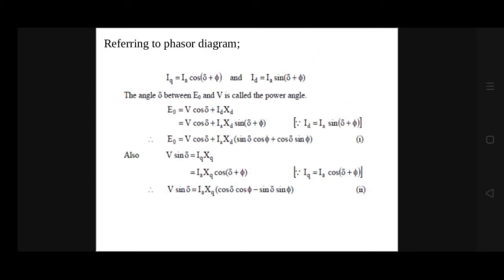Therefore, E0 = V·cos δ + Id·Xd. Replacing Id with Ia·sin(δ + φ) and expanding sin(δ + φ), we obtain equation number 1. Similarly, V·sin δ = Iq·Xq. Substituting Iq = Ia·cos(δ + φ) and expanding cos(δ + φ), we obtain equation number 2.